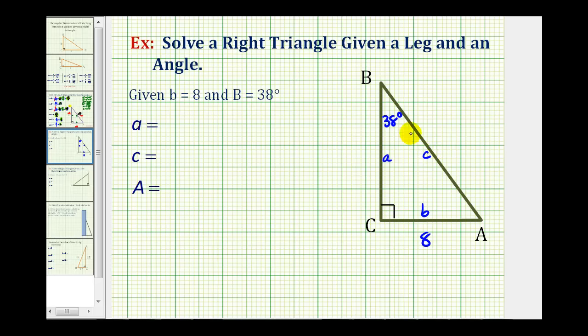Let's start by finding the measure of angle A. We know the sum of the interior angles of a triangle must be 180 degrees, but it's also true that the two acute angles must have a sum of 90 degrees.